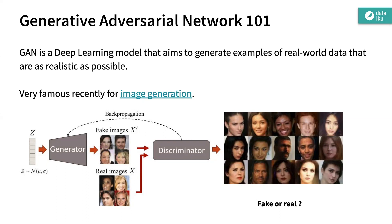Then at the second step — at each batch — you say the generator is trainable and you back-propagate for the whole network. So you have times where the generator is trained and times where it isn't.